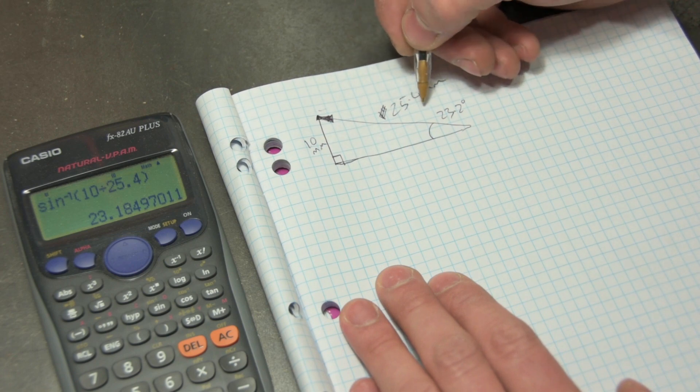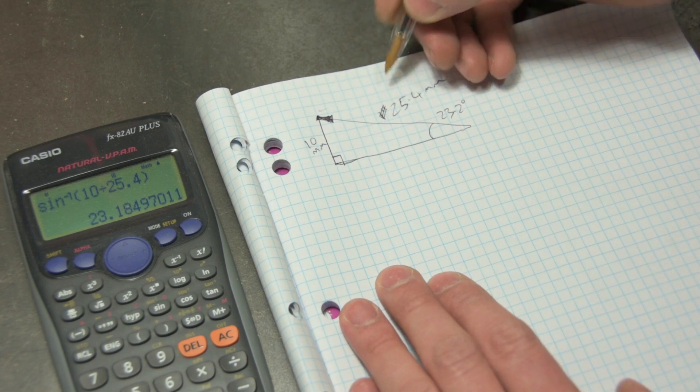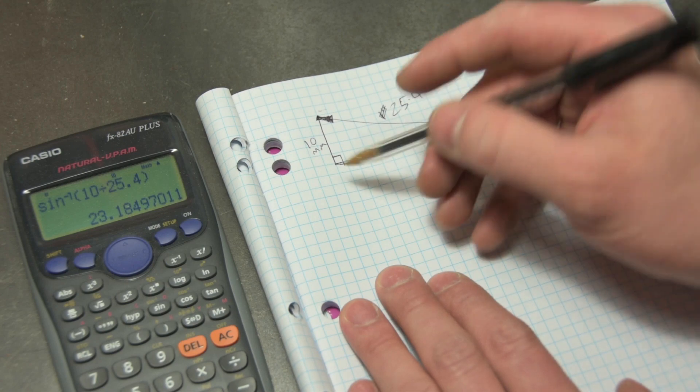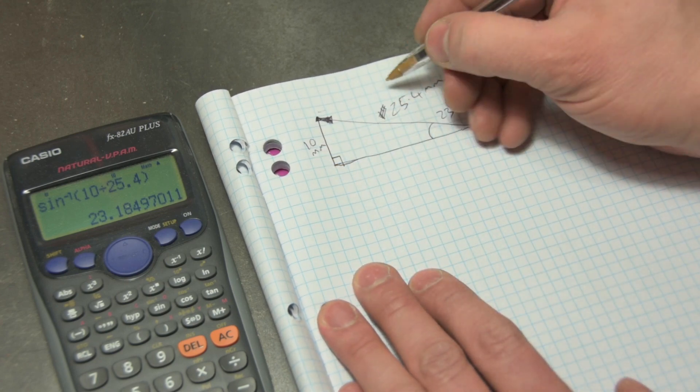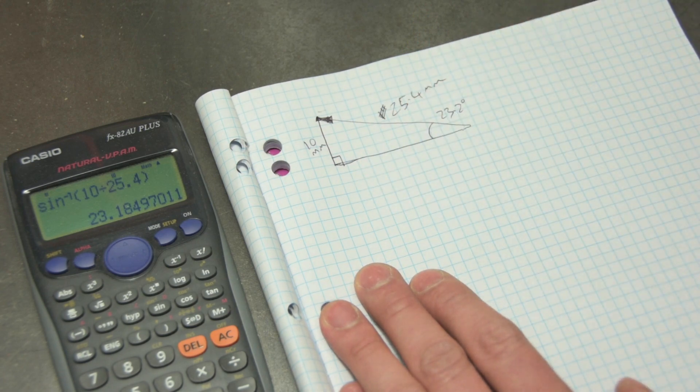And then for every graduation, which I think they're every thou on my lathe, for every graduation here, I'm moving in I think one hundredth of a millimeter here. So let's go and give that a go.